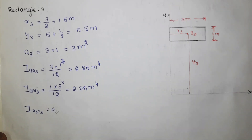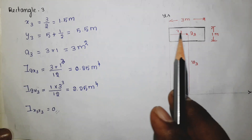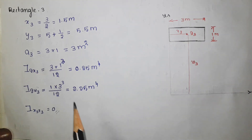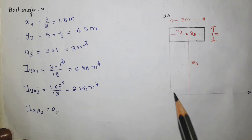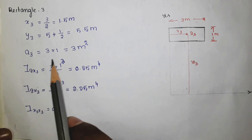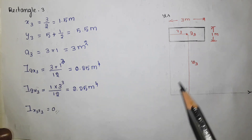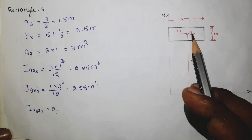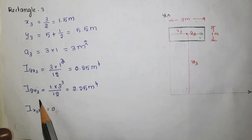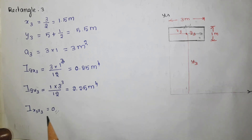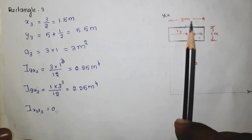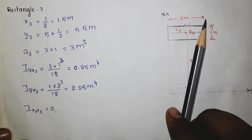For the third rectangle, using the same formula and variables: x3 equals 3 by 2, which is 1.5 meter; y3 equals 5 plus 1 by 2, because this object is located from the x-axis by 5 meter, so 5 should be added. Igx3 is the moment of inertia about the x-axis through g3, and Igy3 is the moment of inertia about the y-axis. The product moment of inertia is 0 because it is axis-symmetrical with respect to both x and y axes.